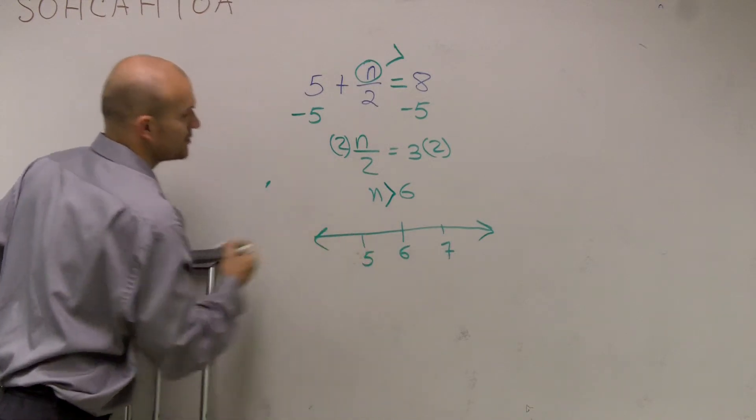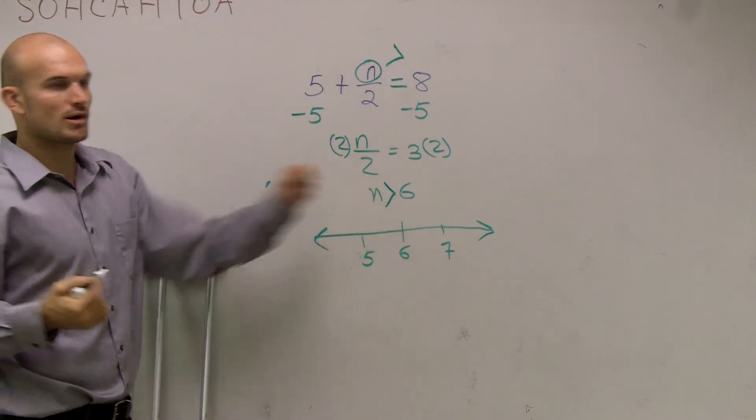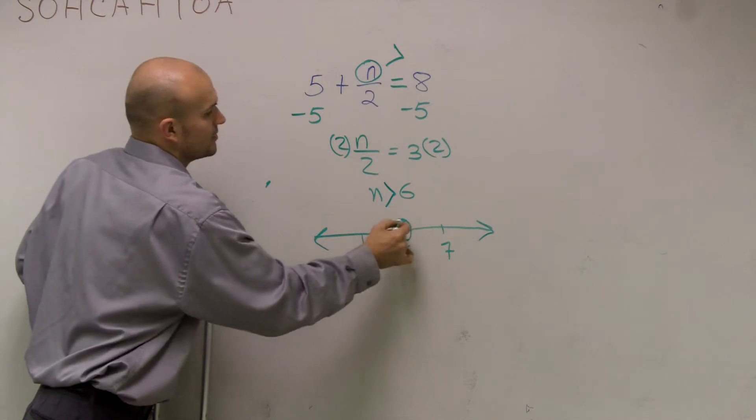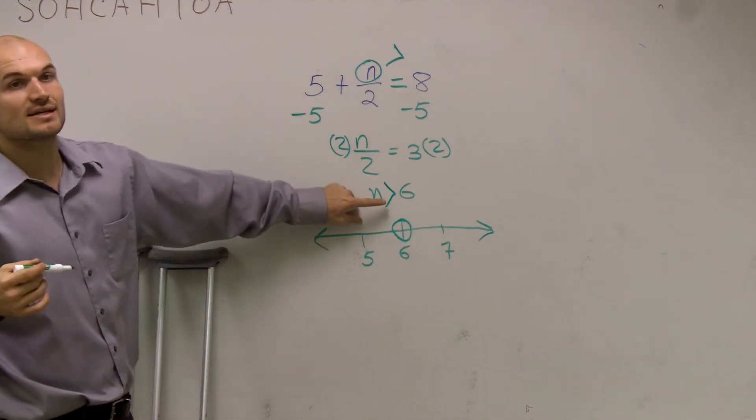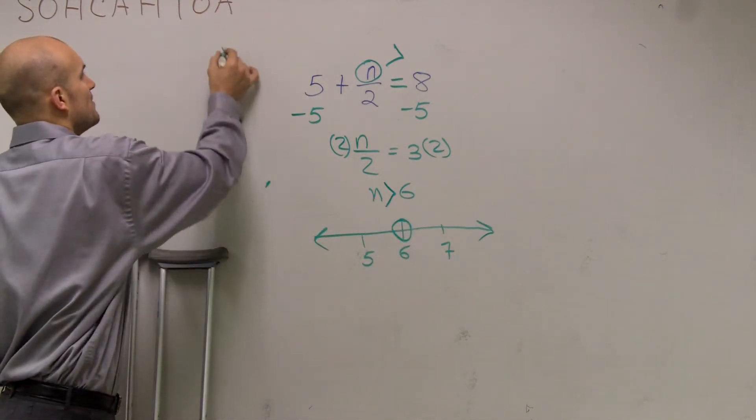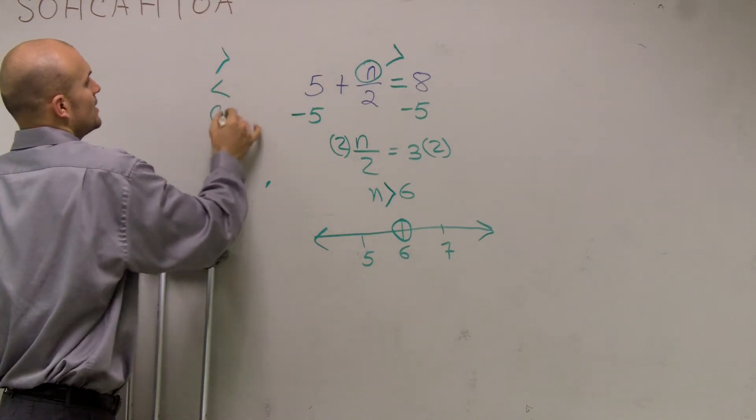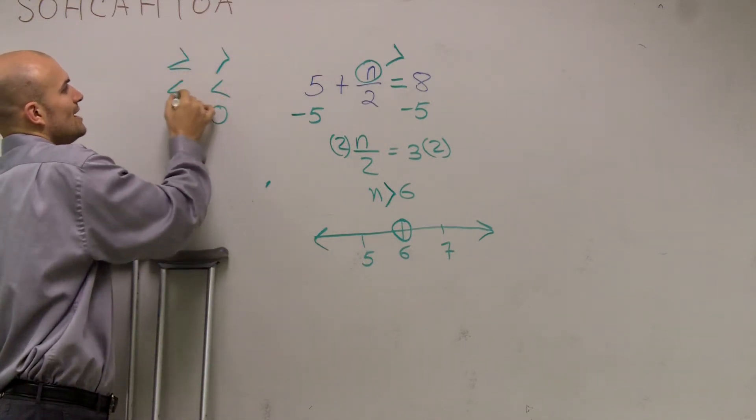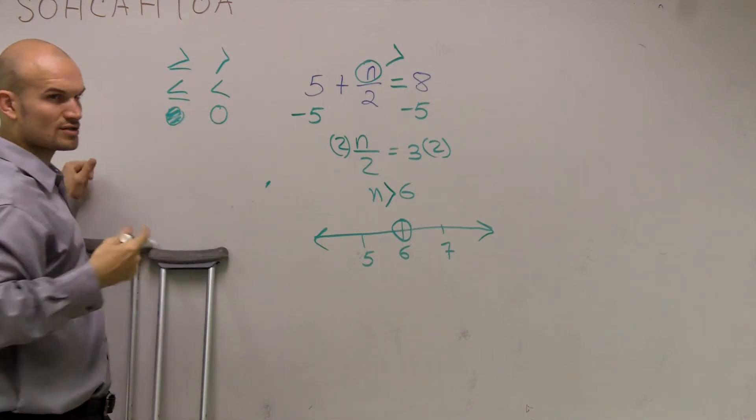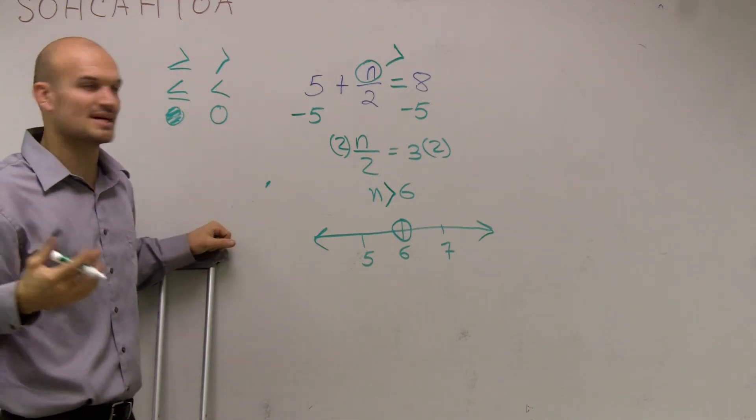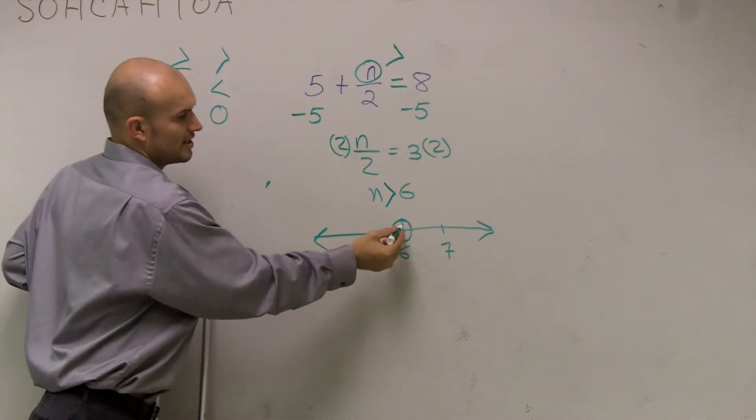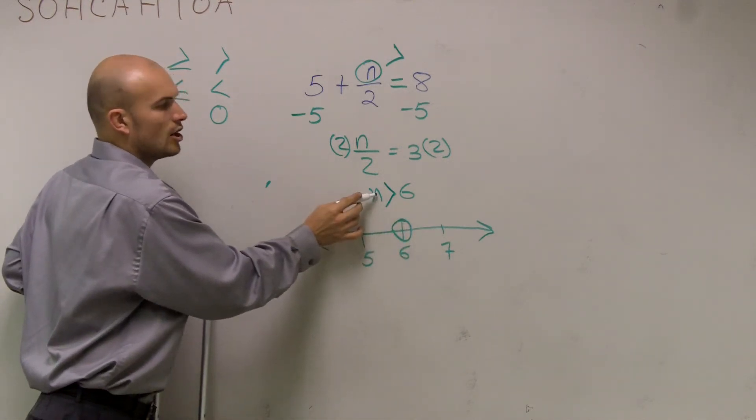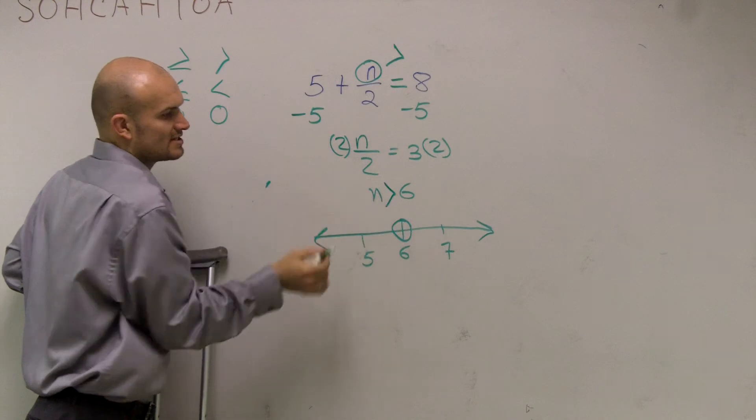So for here, I'm just going to make my own little number line. Remember, we go to our first point and make a nice big circle. Since this is greater than, we remember that greater than and less than are what we call open circles, as greater than or equal to and less than or equal to are what we call closed circles. And we showed you guys why that was when we did test points. So here, it's going to be an open circle, and this says all values n are greater than 6.